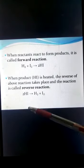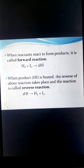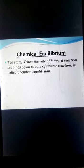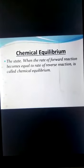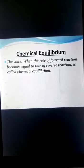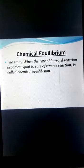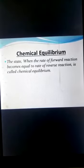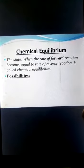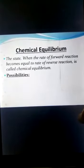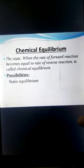A reverse reaction is one in which products recombine to form reactants. What is chemical equilibrium? It is a state when the rate of the forward reaction becomes equal to the rate of the reverse reaction — the rates of forward and reverse reactions become equal.